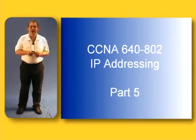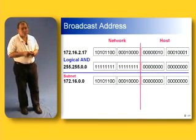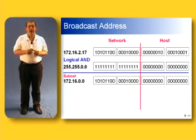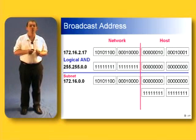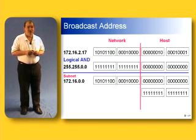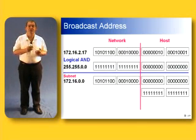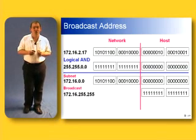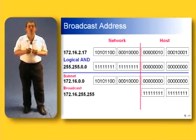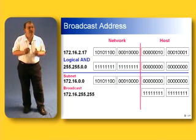So let's take a look at this. Here we have a subnet 172.16.0.0. If we set the host portion to all ones — in other words the last 16 bits set to all ones — and then include the network portion of the address, you can see that combining both the subnet portion and the host portion all set to ones gives us a broadcast address of 172.16.255.255. If we send anything to that address, it will go to every host on network 172.16.0.0.